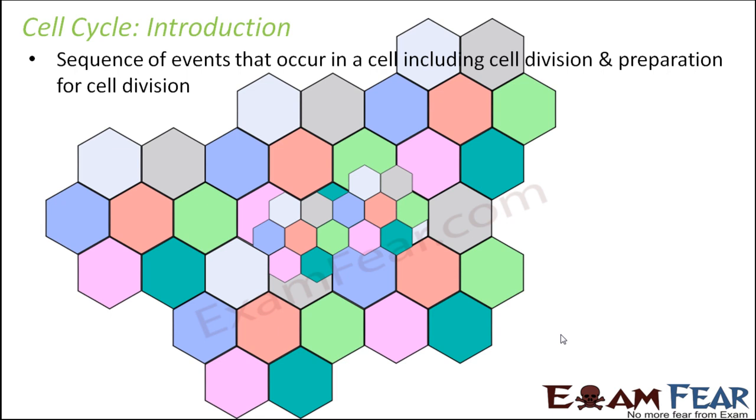So now we will look at the different steps or the different events which have to take place before cell division as well as during cell division. So that entire sequence is known as cell cycle.